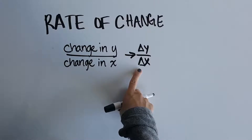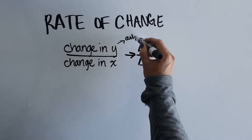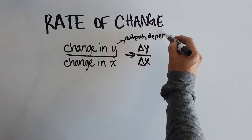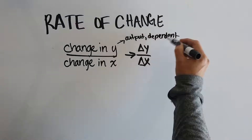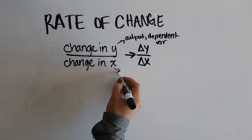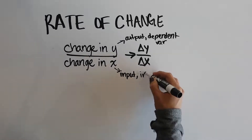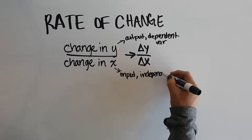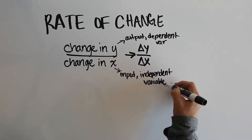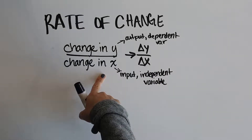One thing we have to remember is that y could be a lot of things. y could represent our output — it could represent our dependent variable in a situation. Same thing for x: x could represent our inputs, but in a situation it represents our independent variable. Being able to identify that is actually really helpful when we're trying to find the rate of change. This definition is one we will always use, and it is true in every single situation.